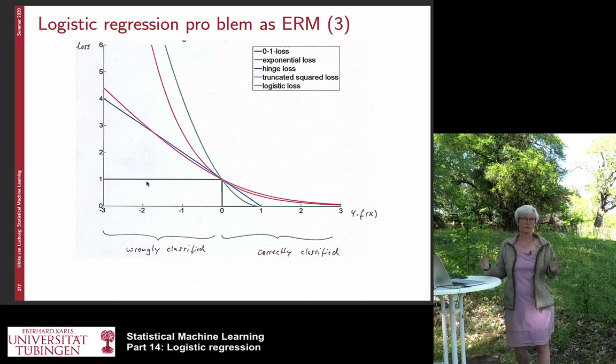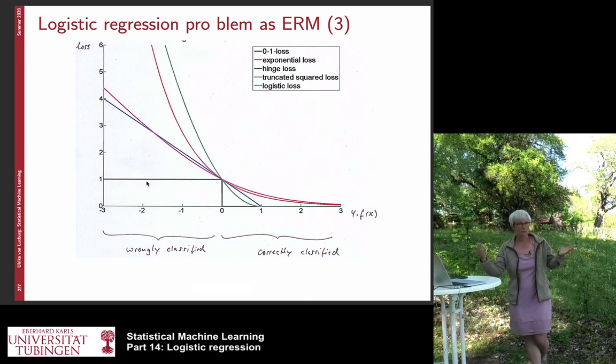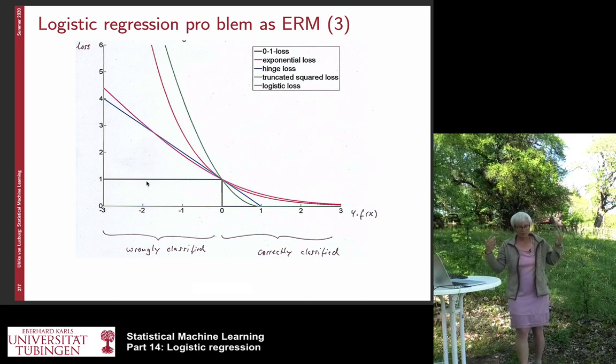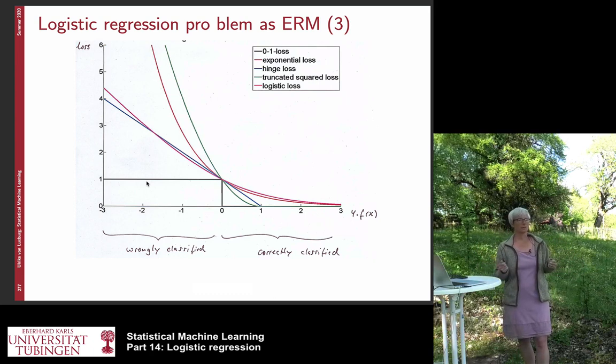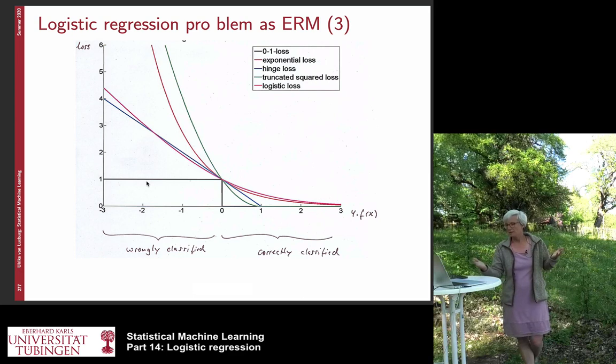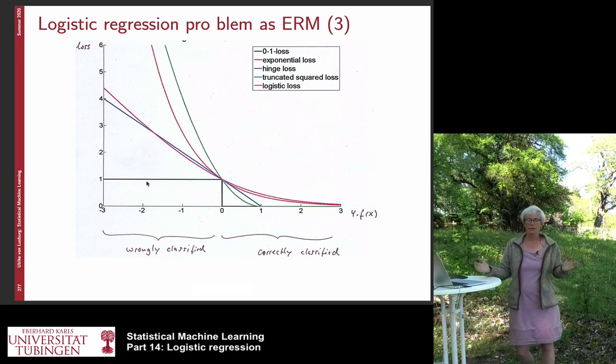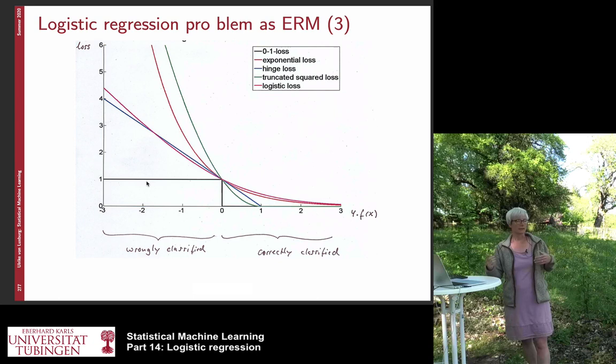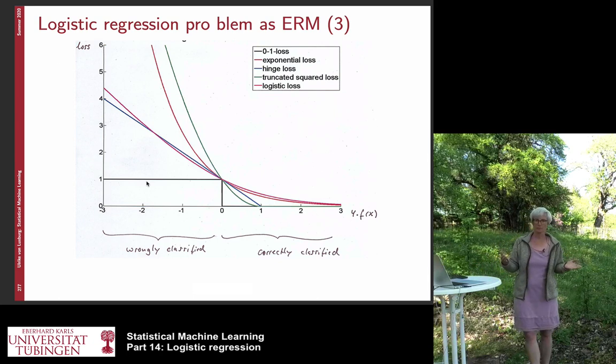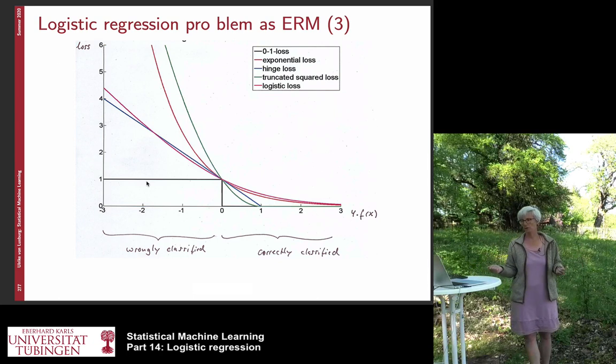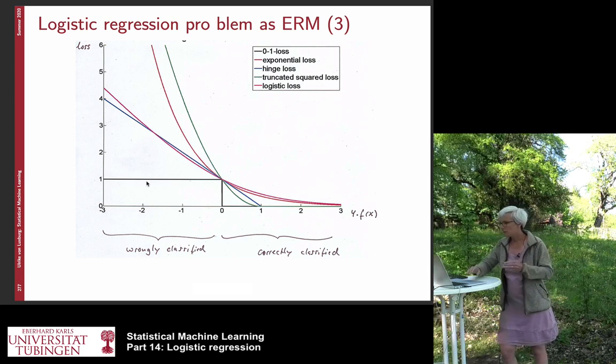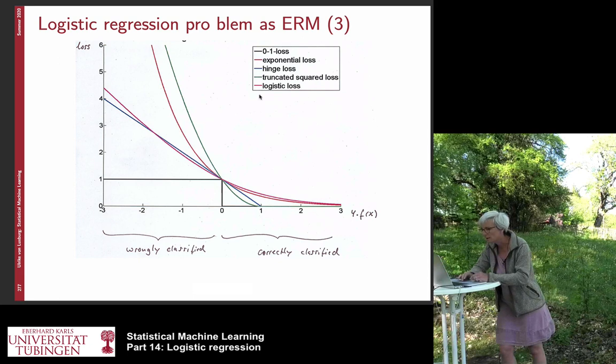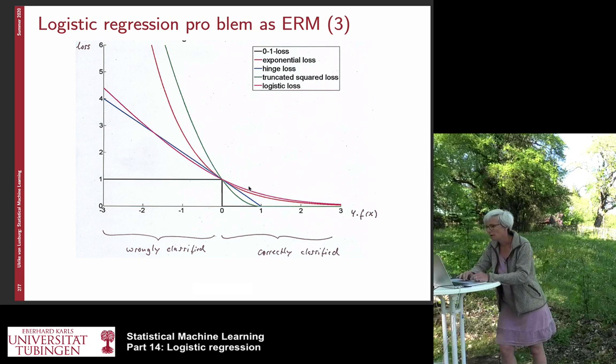Well, this is sort of the one loss function that is, from a theoretical point of view, the natural loss function for classification. And we have also used it, for example, when we defined the base classifier. Now, in practice, this loss function is often very annoying because it's, as you can see already, it's again a discrete loss function. So it's typically not possible to optimize it. So we look for different loss functions. And we have seen here, do I have the squared loss? I don't really have the squared loss here. I have the truncated squared loss.